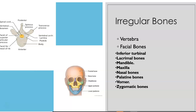The complex shape helps the vertebrae and spinal cord protect from compressive forces. Irregular bones are usually connected with other bones in the body.